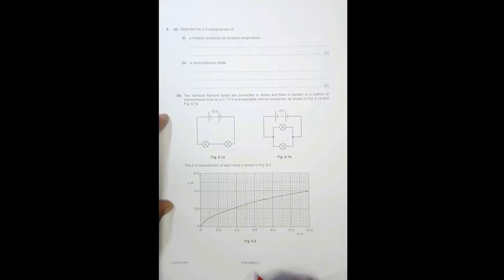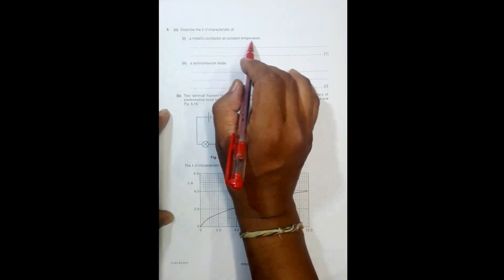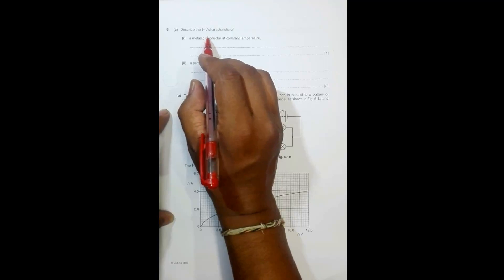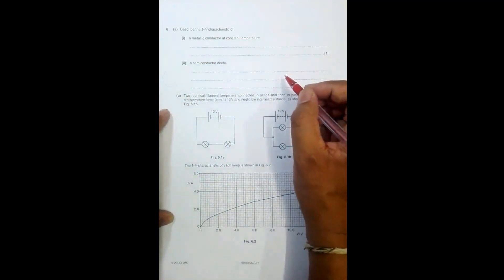This is the question from 2017 major paper 2, question number 6. It is concerned with the chapter on electricity. Part A says describe the IV characteristic of a metallic conductor at constant temperature. We know that a metallic conductor follows Ohm's law, so the current should be zero in the beginning at zero potential difference, and then it must increase linearly. So the graph should be a straight line passing through the origin.